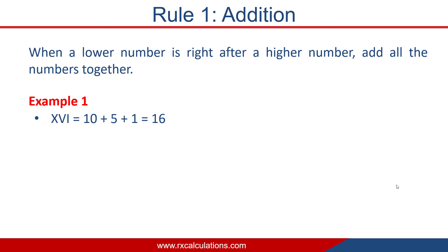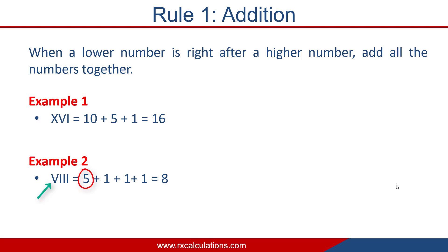Let's look at another example: VIII. The I, which is 1, is to the right of V, and I is lower than V. So you have V = 5, plus I = 1, plus I = 1, plus I = 1. So 5 + 1 + 1 + 1 = 8.